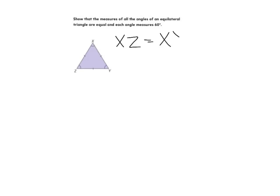For our last example, we're going to show that the measures of all the angles of an equilateral triangle are equal and that each angle measures 60 degrees. We can think of an equilateral triangle as an isosceles triangle and use those properties to help us in our proof. In triangle XYZ, we know that side XZ equals side XY, side ZY equals side ZX, and side YX equals side YZ.